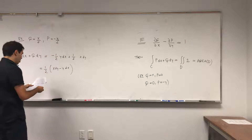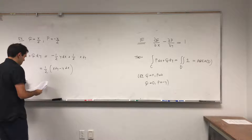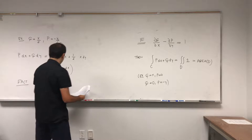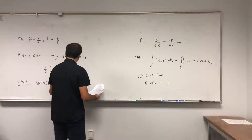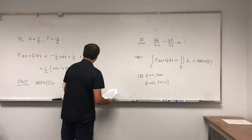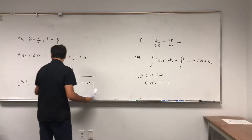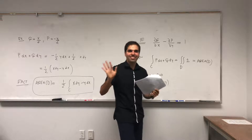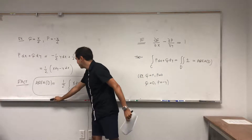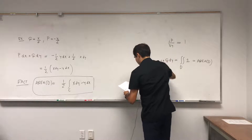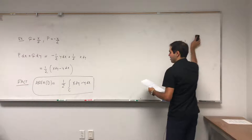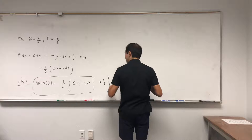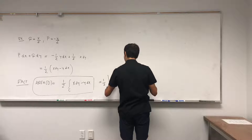Then P dx plus Q dy just becomes minus one-half y dx plus one-half x dy, and you can write it as one-half (x dy minus y dx). So the area of your region is just one-half of the line integral of x dy minus y dx. And by the way, there's an easy way to memorize this — it's just one-half of the determinant of the matrix [x, y; dx, dy], formally speaking.